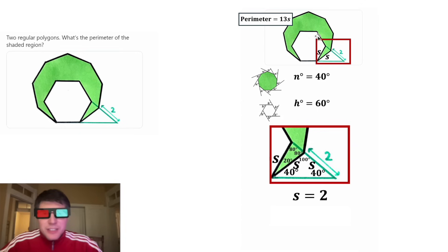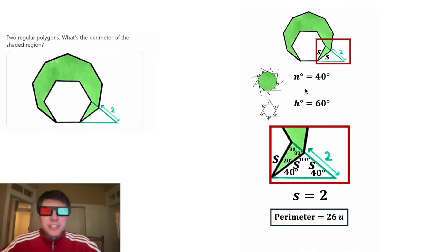Now we know that all of these sides are equal to 2. So in this original equation, in the place of S, we can plug in 2. 13 times 2 is equal to 26, and let's give it a label of units. So the perimeter of this shaded region is equal to 26 units.